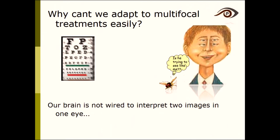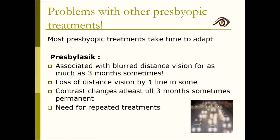We didn't opt for multifocal corneal treatment because the brain receives different images — distance and near — simultaneously from the same eye and takes a long time to add them up. From colleagues who used to do multifocal corneas, almost all patients reported blurred distance vision, 99% had at least one line of distance loss, most took three months to adjust, and after five to six years the treatment had to be repeated.